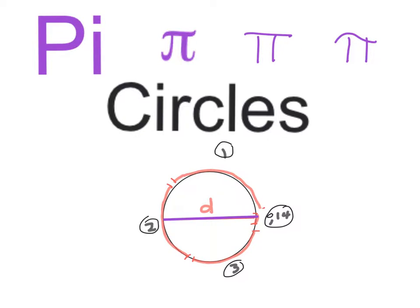Pi is the amount of times this purple line over here which we call the diameter fits into the circumference of a circle of that specific circle.